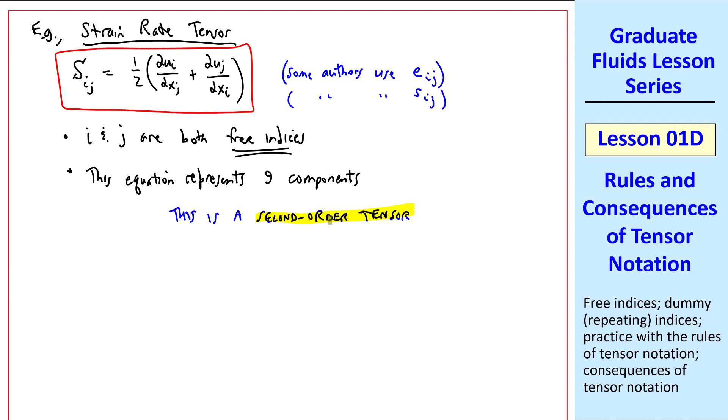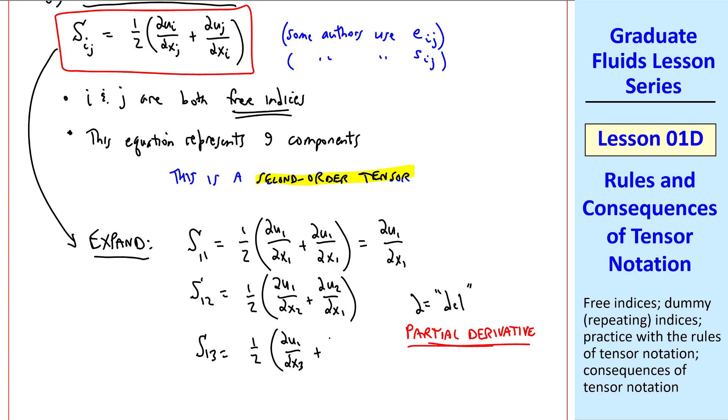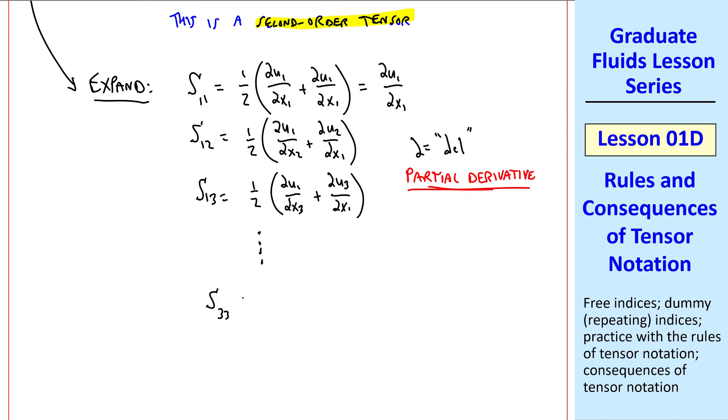Second-order tensor has nine components and two free indices. We can expand this like we did with the previous example. When i and j are both 1, we expand it this way. And since these two terms are the same, this reduces to del u1 del x1. When i is 1 and j is 2, we have 1 half del u1 del x2 plus del u2 del x1. Note that I call the del operator del, and it's used when we have partial derivatives. Similarly, when i equal 1 and j equal 3, we get this expression. You can fill in the rest yourself for practice. There are nine of these. The ninth one will be S33, which reduces to del u3 del x3.